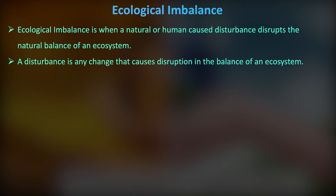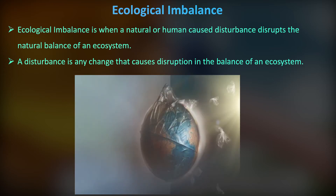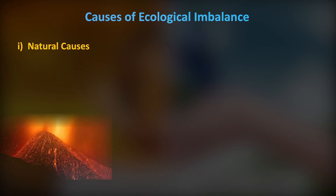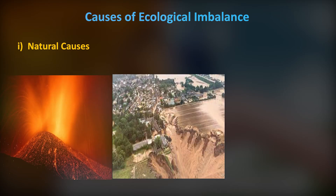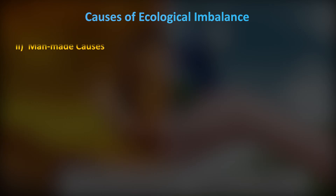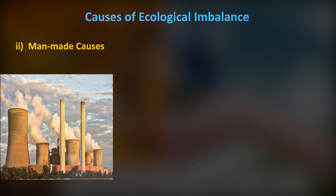Natural disturbances include volcanic eruptions, landslides, natural fires, and forest fires. Human-made disturbances include overpopulation, deforestation, forest cutting, and pollution.